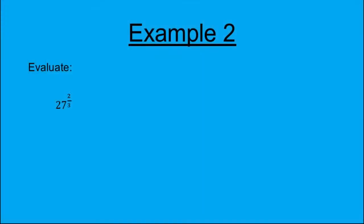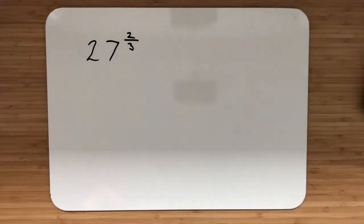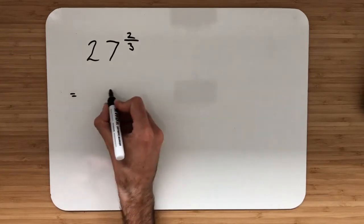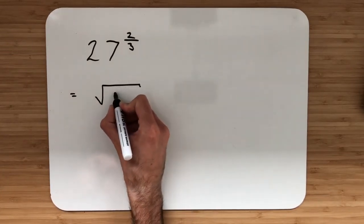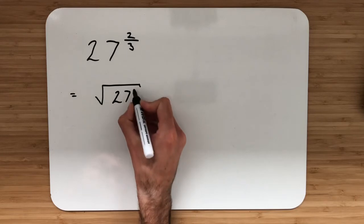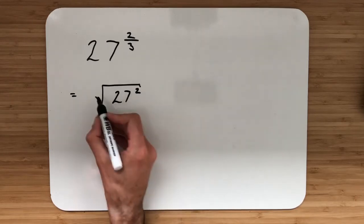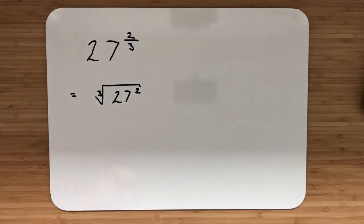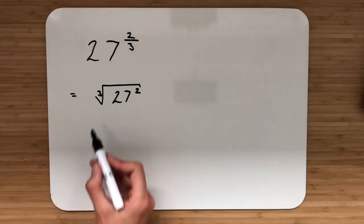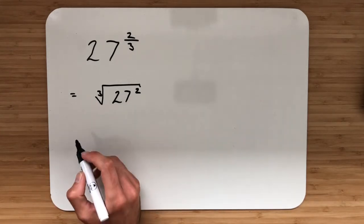Example 2: evaluate 27 to the power of two thirds. We've got 27 to the power of two thirds. Same thing again — top number stays, bottom number strays. The top number is the power and stays; the bottom number strays to the outside of the root. That now becomes the cube root of 27 squared.